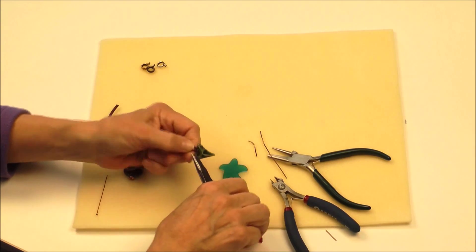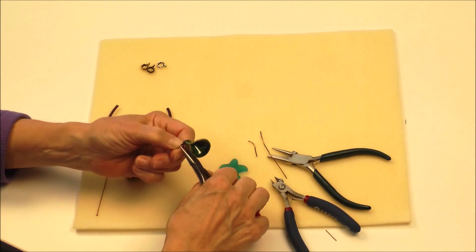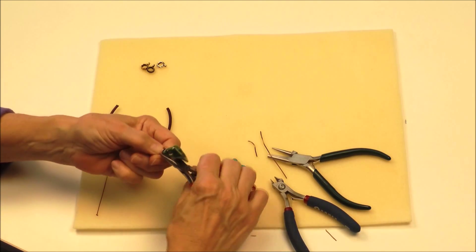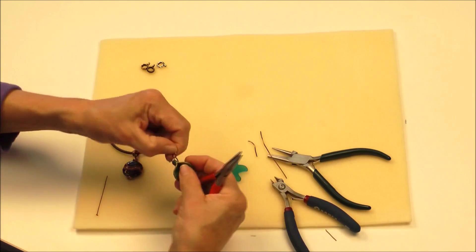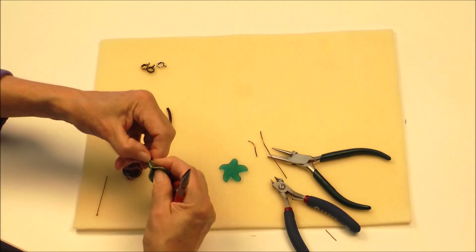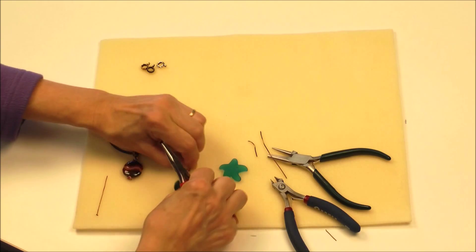And then I will just take my chain nose pliers and press in the ends of the wire so it looks neat and it doesn't scratch anyone. And there is my finished bail.